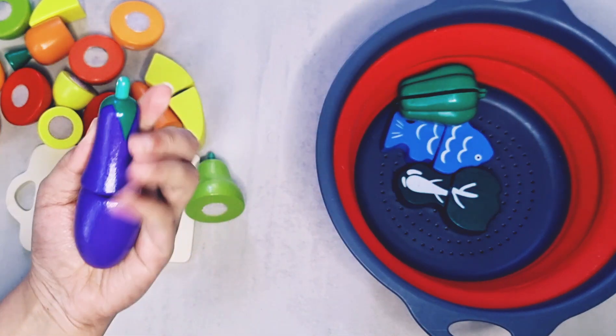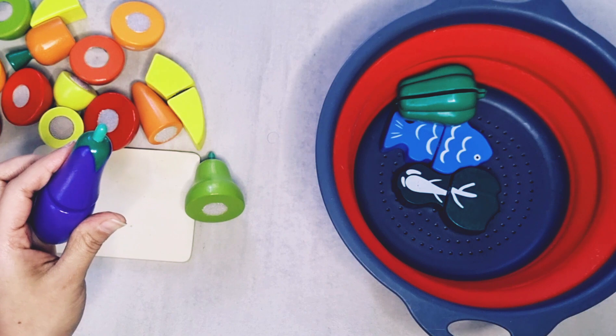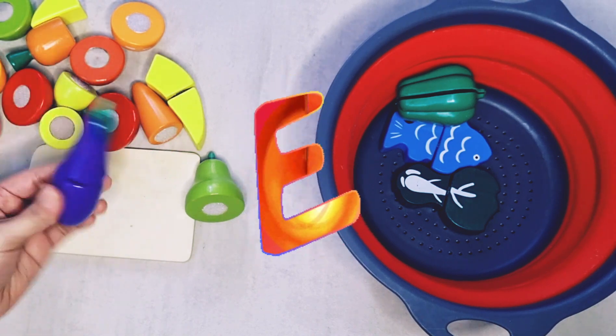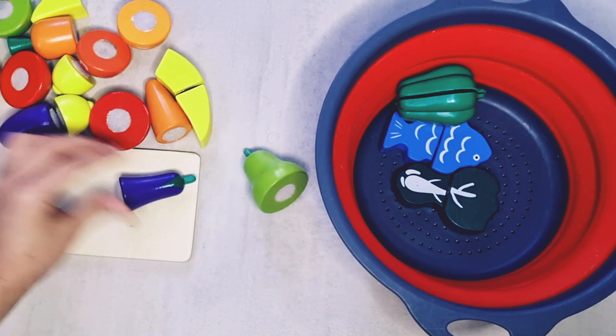This is an eggplant. Eggplant starts with the letter E and it's purple in color. Let's cut the eggplant. There you go.